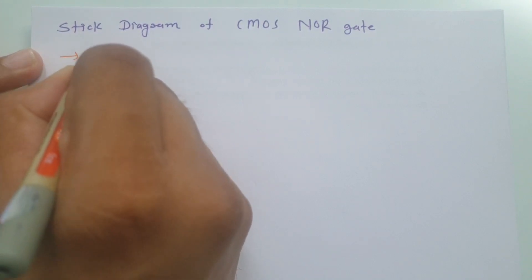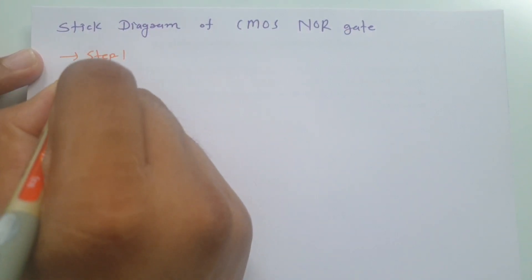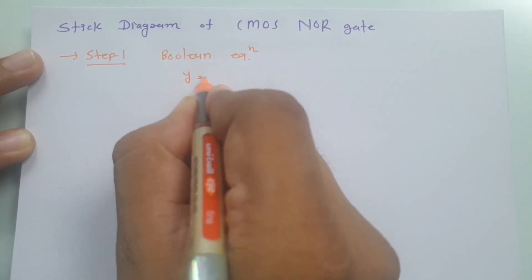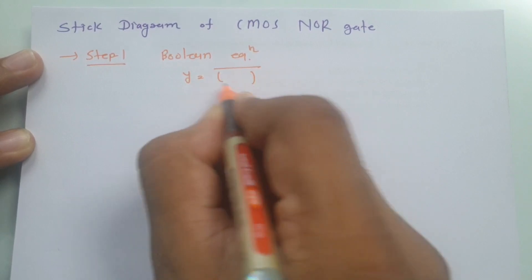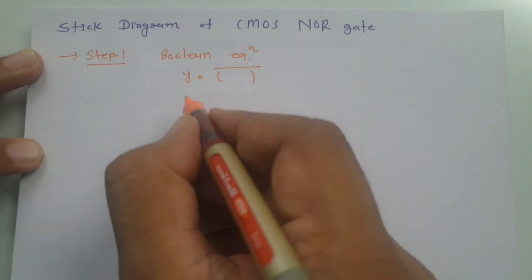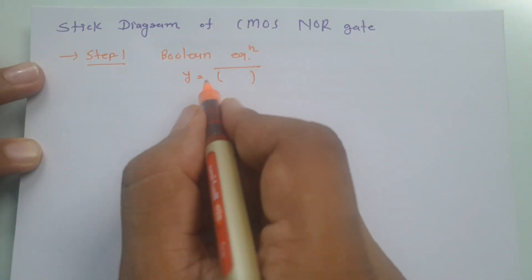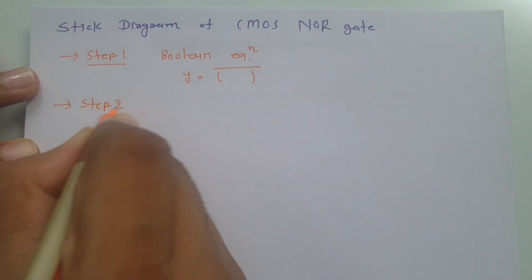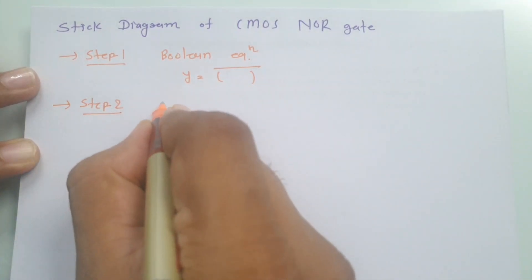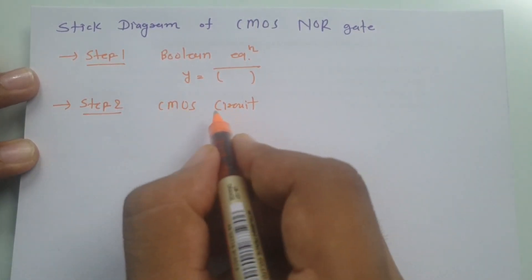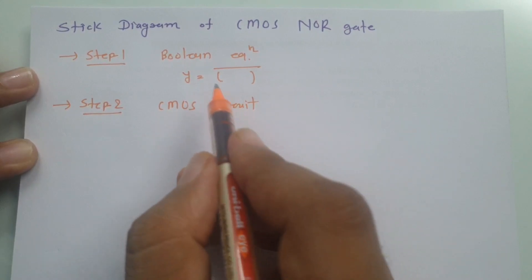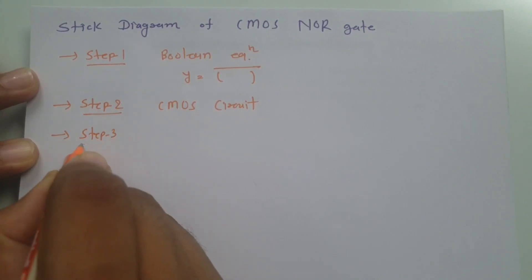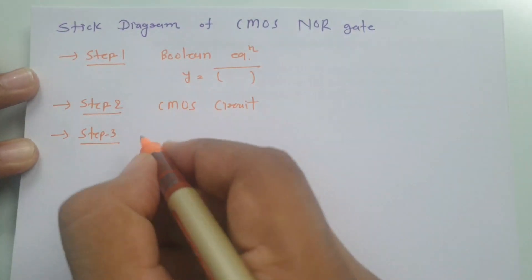The first step is to identify the boolean equation and express it in complement-of-operation form. The second step is to form the CMOS circuit based on the boolean equation. In the third step, we make the stick diagram with color code.